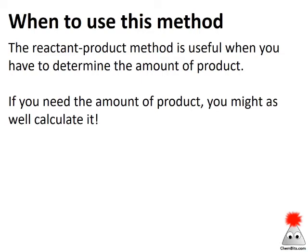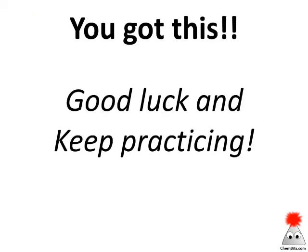When do we use the reactant-product method? We saw a perfect example: when we want to find something about the product. There are other ways to find the limiting reactant, but we might as well find the product right away. If your problem is asking for information about a product — theoretical yield, percent yield, or the amount of product being made — this is probably a good method to use. Now that you've seen an example, make sure you go out and practice with a whole bunch of others. Stoichiometry problems all follow the same four steps; it just takes a little practice. Good luck!